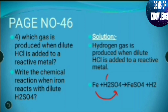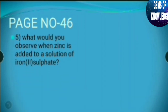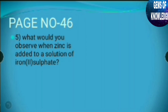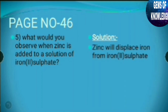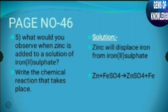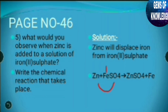The last question: What would you observe when zinc is added to a solution of iron 2 sulfate? Zinc will displace iron from iron 2 sulfate. The chemical reaction: Zn + FeSO4 → ZnSO4 + Fe. Zinc combines with SO4 to form zinc sulfate solution, and iron is left free. That's all for today.